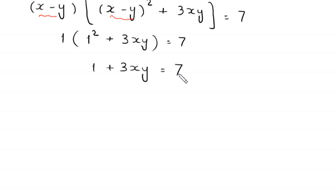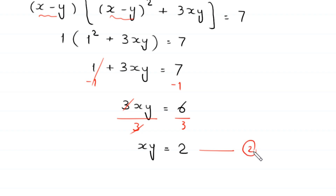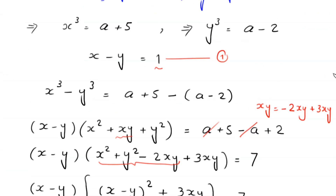Subtracting 1 from both sides gives 3xy = 6. Dividing both sides by 3 gives xy = 2. Let's call this equation 2. Recalling equation 1: x - y = 1.